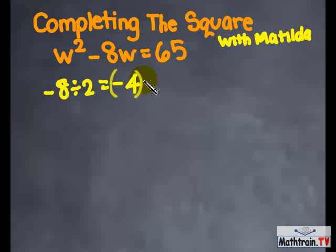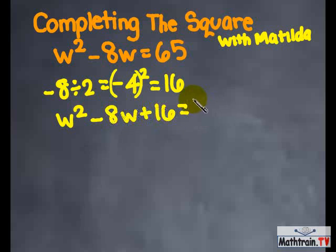Then, you square that number and add it to both sides. So, negative 4 squared equals 16. w squared minus 8w plus 16 equals 81.